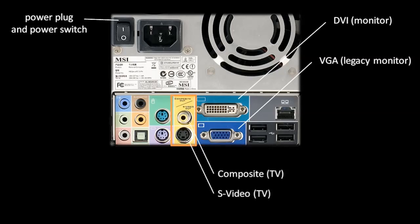On this particular computer, we happen to have outputs to send an image to a television. You probably recognize these from the back of televisions, VCRs, and DVD players. The one on top is called Composite, and the one on the bottom is called S-Video. These are also examples of legacy technologies — they're being phased out in favor of newer standards like HDMI.